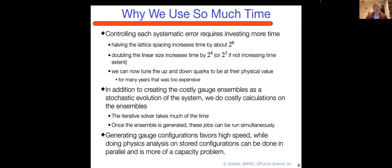Why do we use so much computer time? It's because controlling each of these systematic errors involves investing more time. If I halve the lattice spacing, it's going to increase the time of the calculation by about a factor of two to the sixth at a fixed physical volume. If I want to increase the physical volume, say double the linear size, then you get a factor of two to the fourth because it's X, Y, Z and T. And tuning the up and down quark masses to their physical values, for many years it was too expensive and now we can do it.